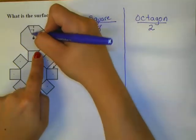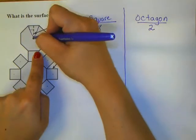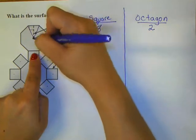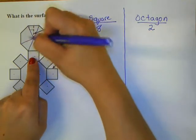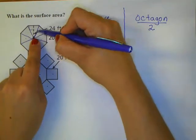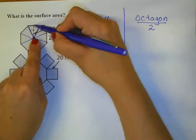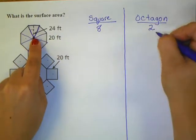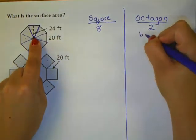To find the area of an octagon, I know that I can find the area of the triangles that make it up. So an octagon has eight triangles, so I'm just going to start with one triangle and figure out what the area is.